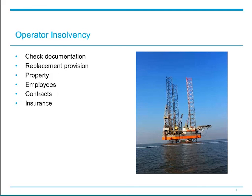In addition, contracts which the operator has entered into with suppliers are likely to allow the contractor to terminate them in the event of an insolvency of the operator. So it's important also to understand where the ownership of assets used by the operator vests, and this will typically be determined by the law governing the place in which the assets are situated. The fact that a JOA refers to assets as joint property or an account as a joint account will not of itself be determinative of ownership — it will be necessary to dig a bit deeper in terms of the name of the account at the bank and how that's been operated in order to determine whether, for example, a joint account is held on trust.